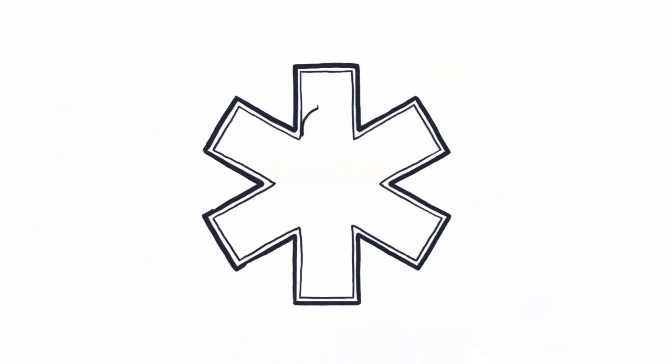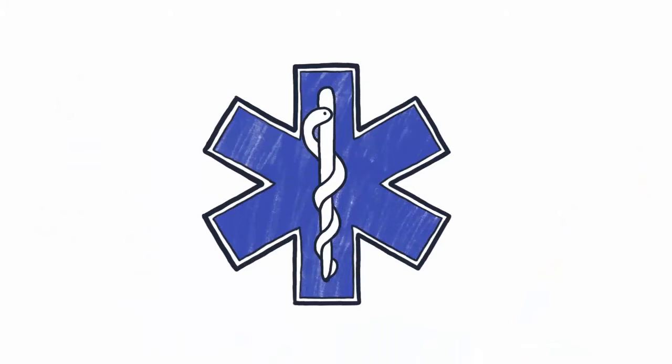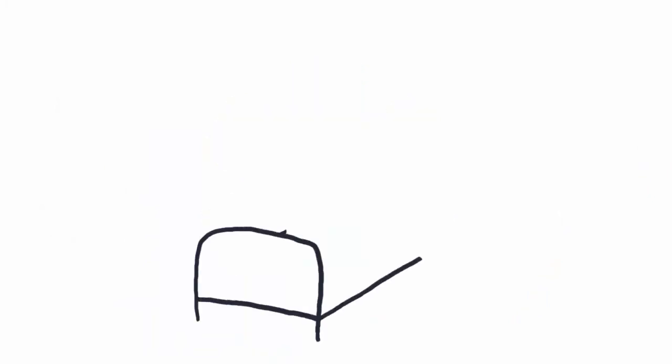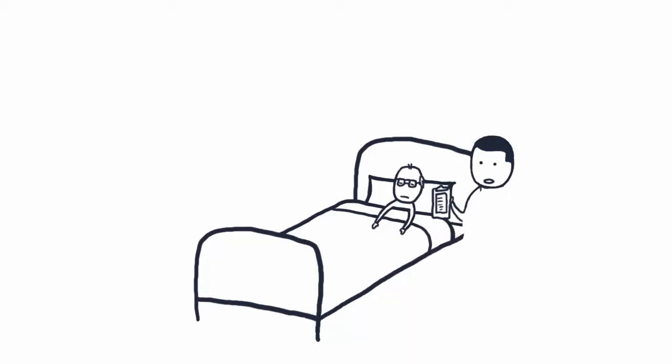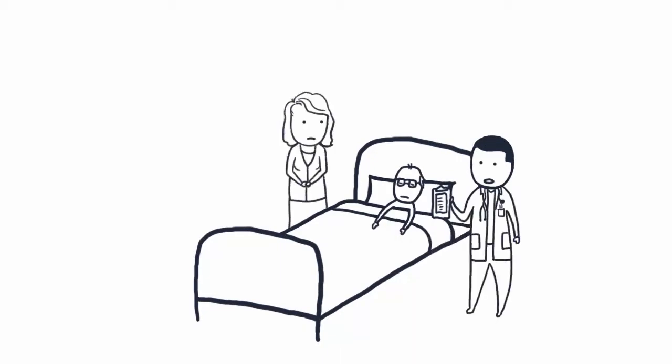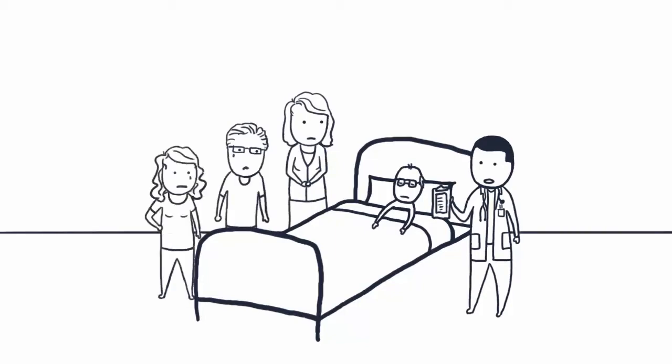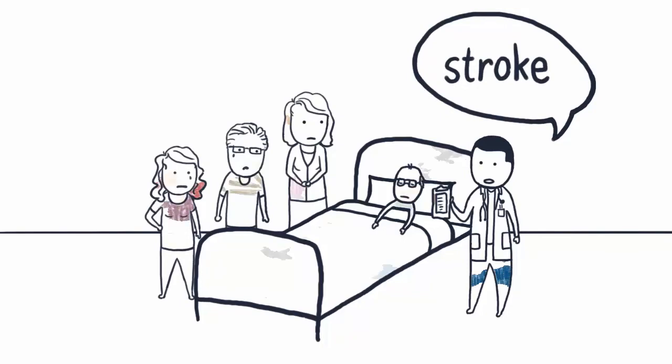Thirty minutes later, Brad arrives via ambulance at UK Healthcare. Within minutes, his situation worsens. Seizures begin. Clothes are cut off, arterial and central lines are placed. Brad is intubated, all while his loved ones look on and learn. Vision loss? It's a stroke symptom.